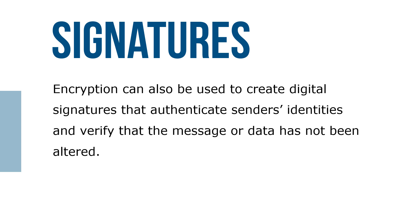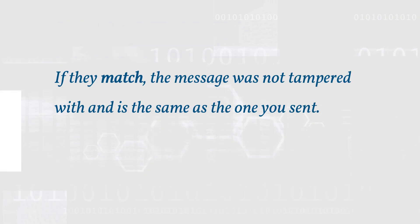Encryption can also be used to create digital signatures that authenticate the sender's identity and verify that the message or data has not been altered. When you send an encrypted message and a digital signature, the recipient uses your public key to decrypt the message, then uses the same algorithm to hash the message and create another version of the message digest.